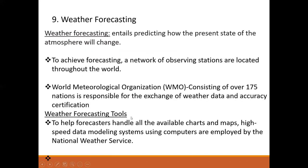There is a need to do weather forecasting, which entails predicting the present state of the atmosphere. To achieve forecasting, a network of observing stations is located around the entire world in almost all countries. The World Meteorological Organization, which consists of 175 member nations, is responsible for the exchange of weather data. This means that sitting in Zambia, South Africa, Sweden, or India, one can access accurate weather data for the USA or Brazil for the purpose of estimating solar power production.